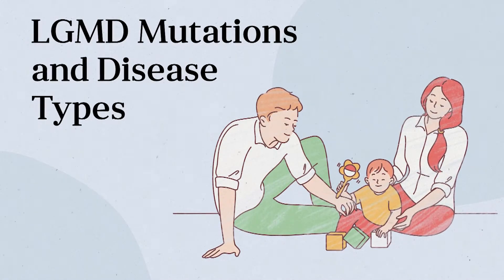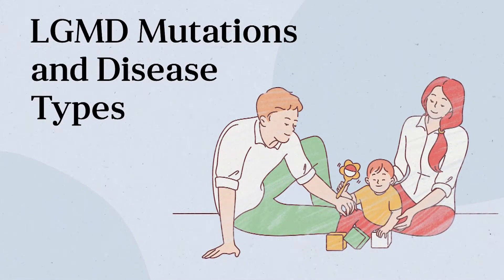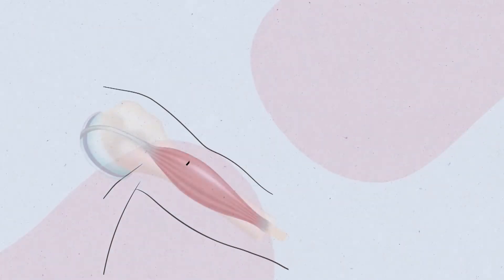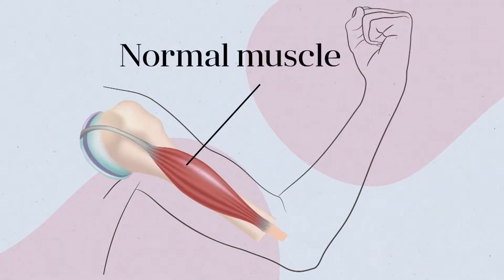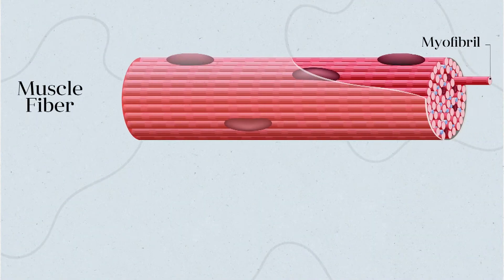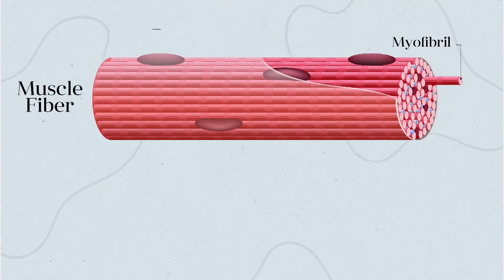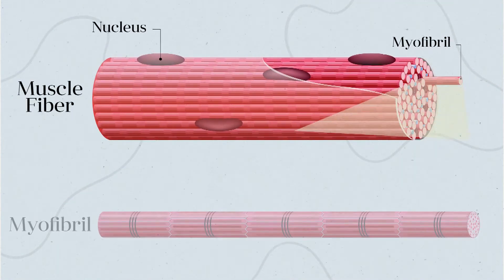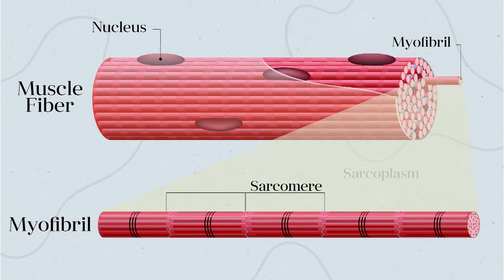Limb-girdle muscular dystrophies are caused by gene mutations that lead to defects in various proteins in the muscle fiber. Defects can cause problems anywhere in the muscle fiber, including the inner nuclear envelope membrane, the sarcomere, the sarcoplasm, or the sarcolemma.